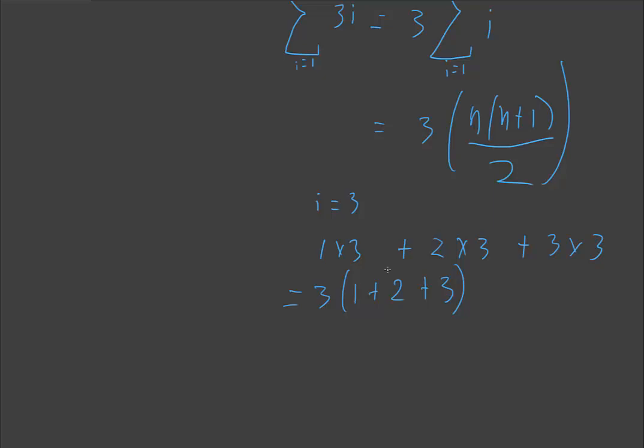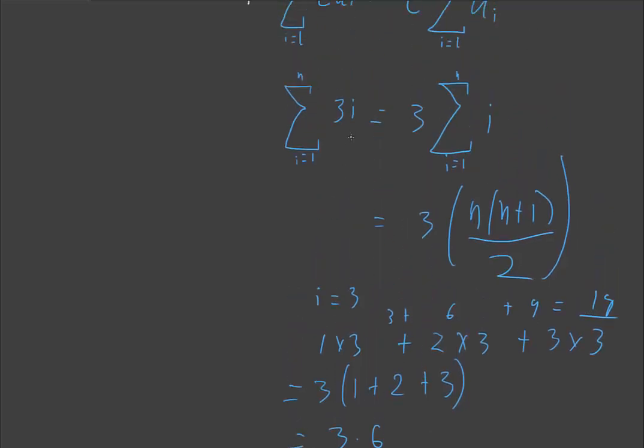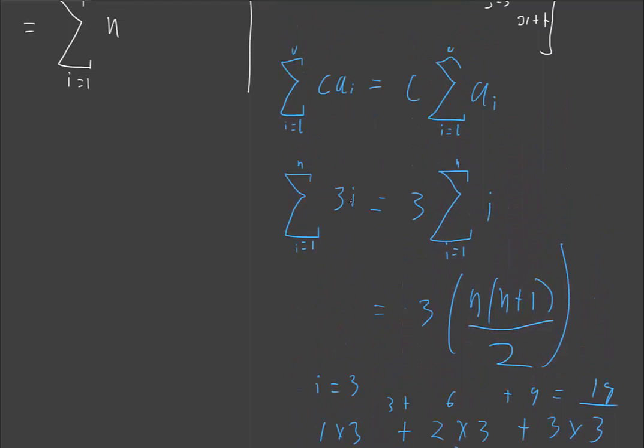So obviously if we kind of followed this through to conclusion here we have 3 plus 6 plus 9 which is going to equal 18. Is exactly the same as 3 times 1 plus 2 plus 3 is 6 which equals 18. So by taking the 3 out the front, by factoring it like this, we can take any term that's not dependent on i. Even though this is 3i, the 3 itself is just being multiplied every time, it's not an i.